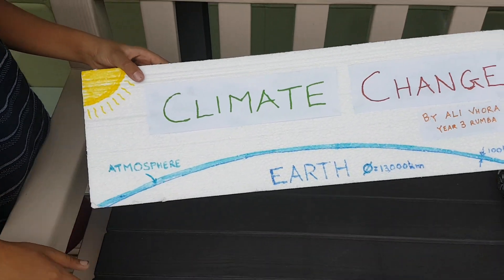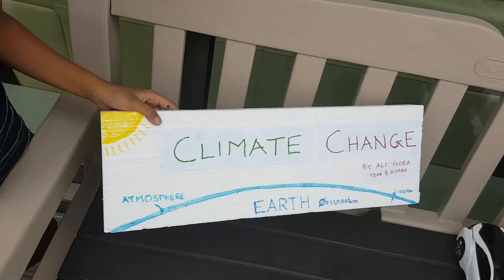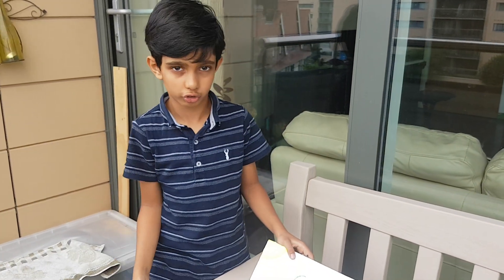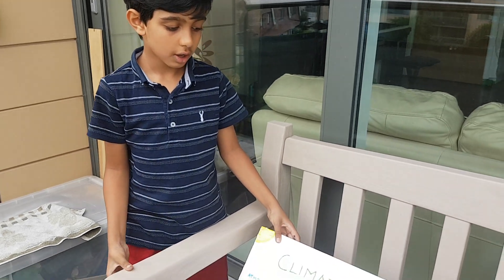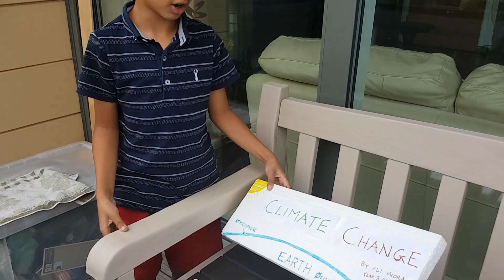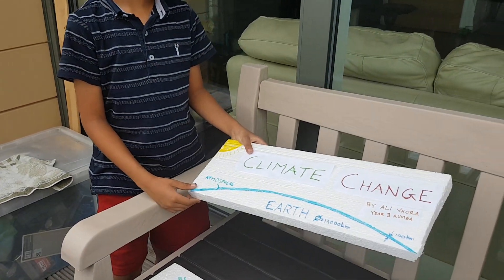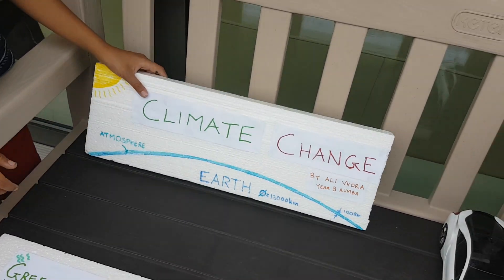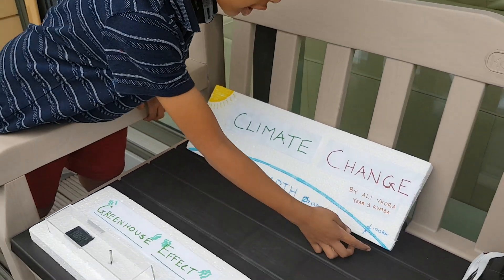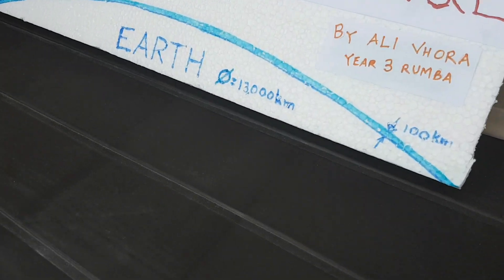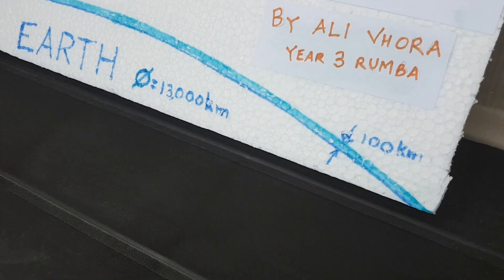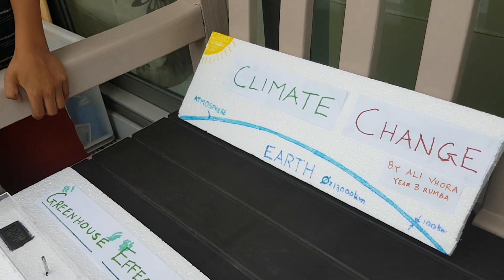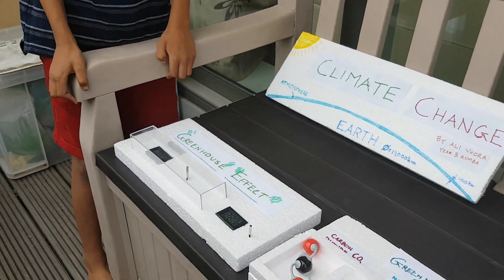Climate change is caused by extreme weather conditions, which also causes global warming. An atmosphere can't hold much pollution, because we only have an atmosphere of 100 km with an earth of 13,000 km. So the diameter of earth is 13,000 km, but the atmosphere is just 100 km.